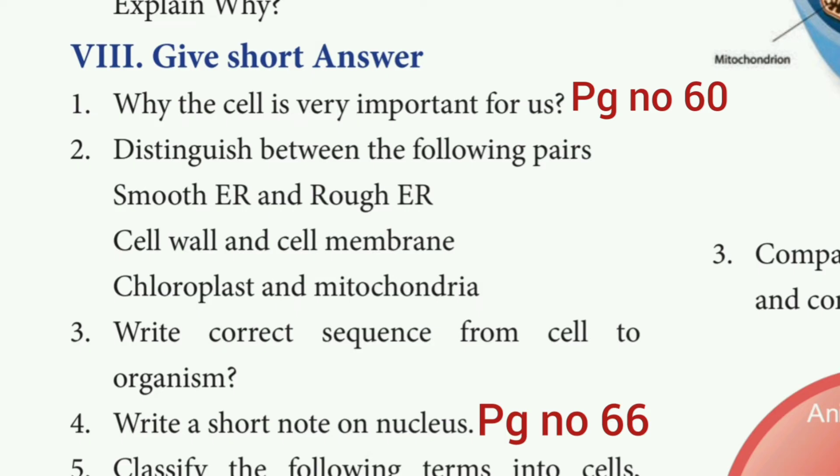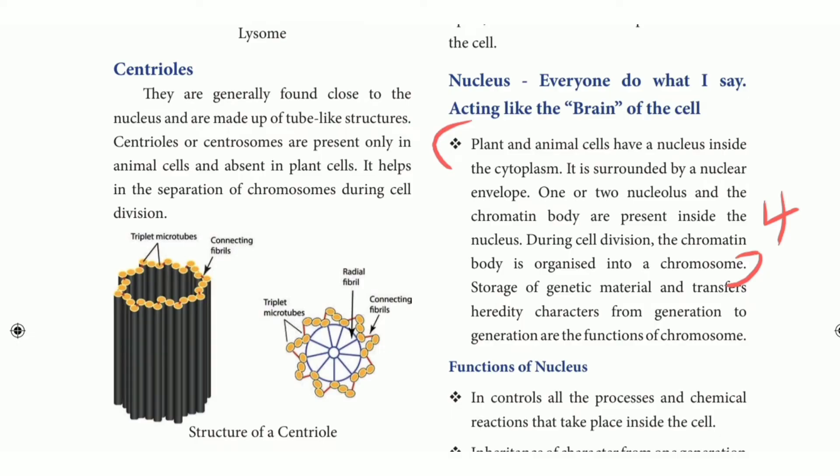Fourth question: Write a short note on nucleus. Page number 66. Plant and animal cells have a nucleus inside the cytoplasm. It is surrounded by the nuclear envelope. One or two nucleolus and the chromatin body are present inside the nucleus. During cell division, the chromatin body is organized into their chromosome.